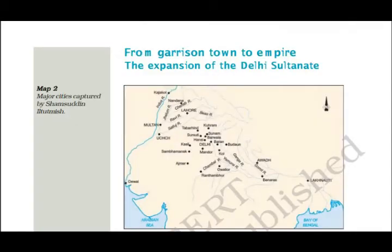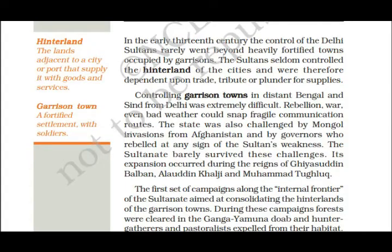The next topic is 'From Garrison Town to Empire: The Expansion of the Delhi Sultanate.' You can see in this map which areas were under Sultan Shamsuddin Iltutmish. In the early 13th century, the control of the Delhi Sultans rarely went beyond heavily fortified towns occupied by garrisons. Control outside the city was limited, and they depended on gifts and supplies.